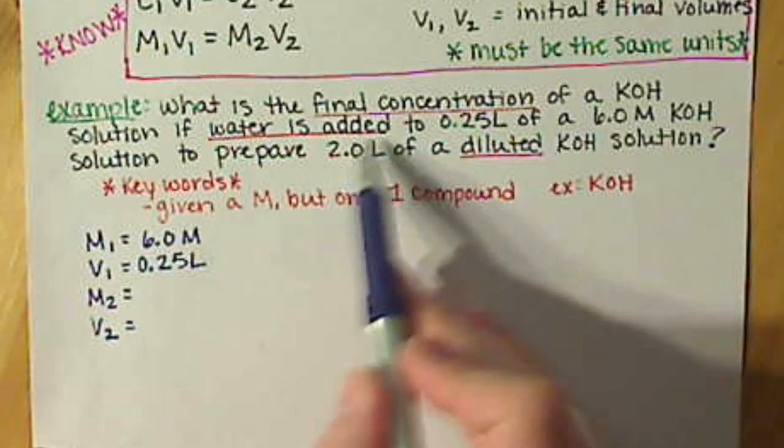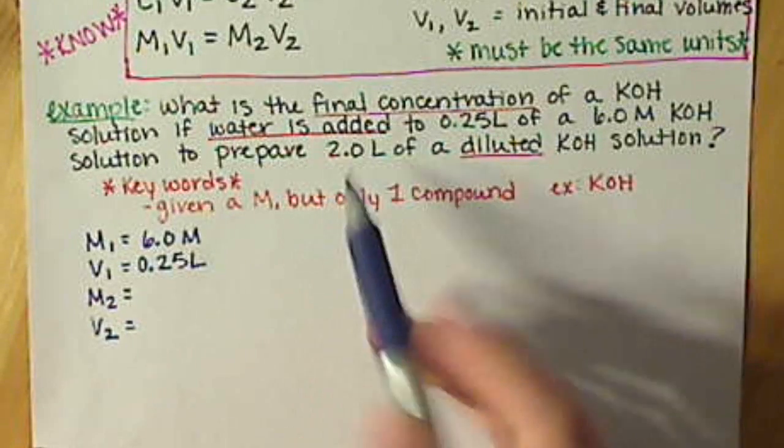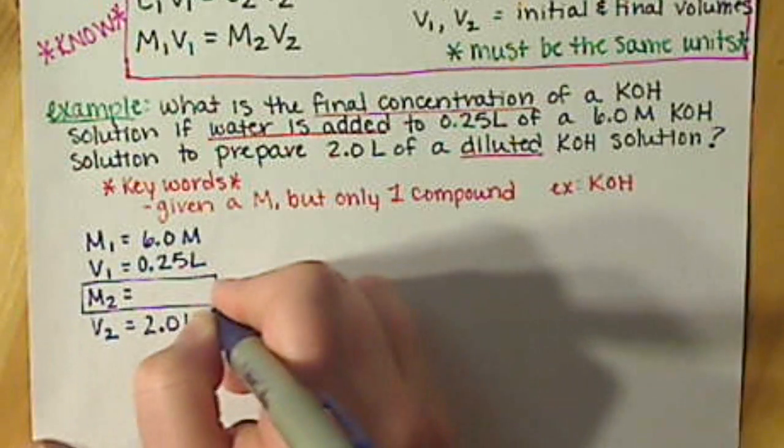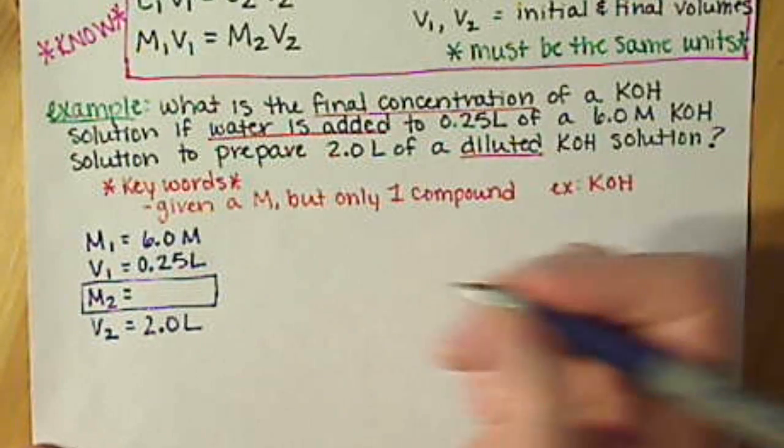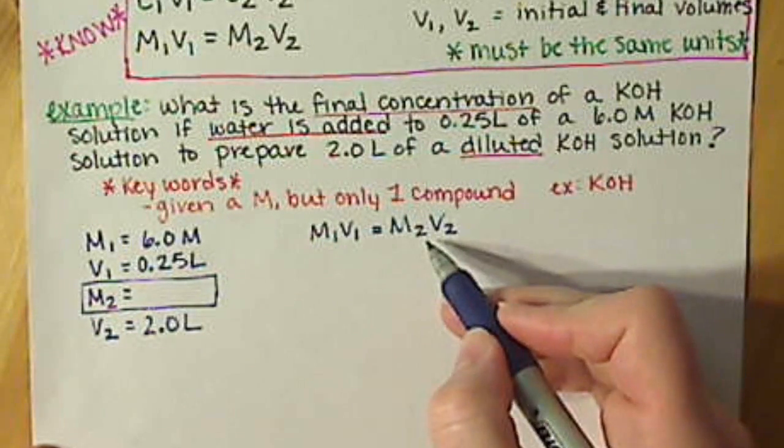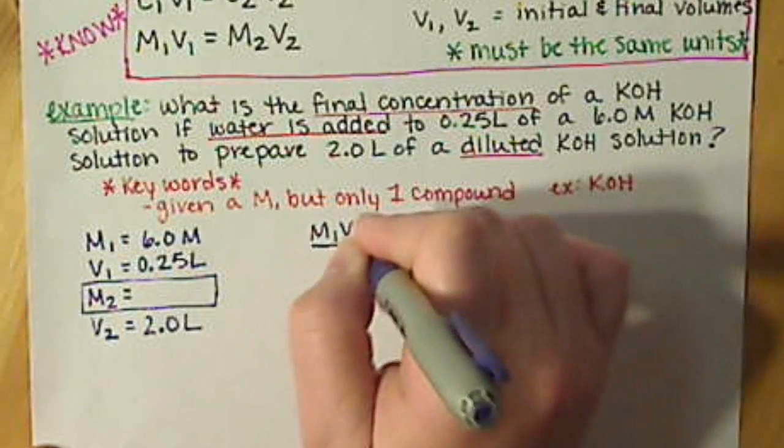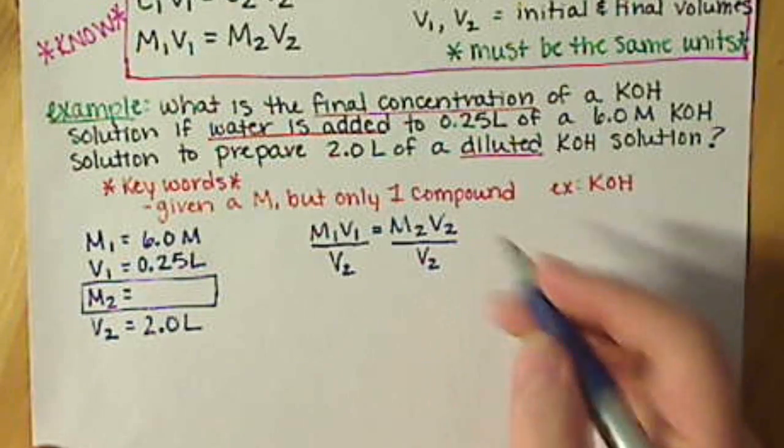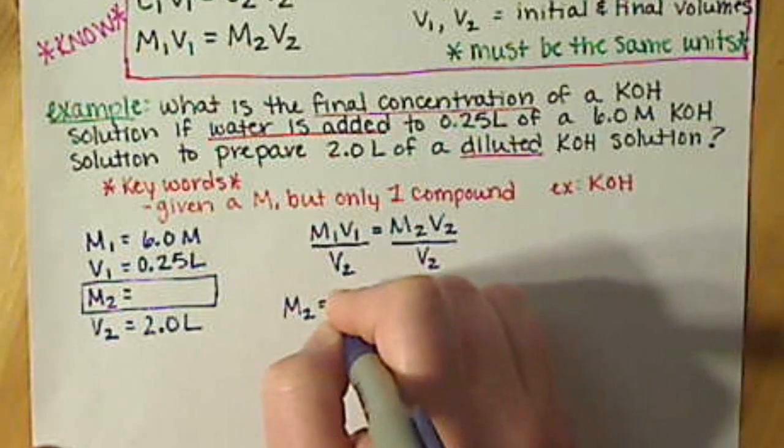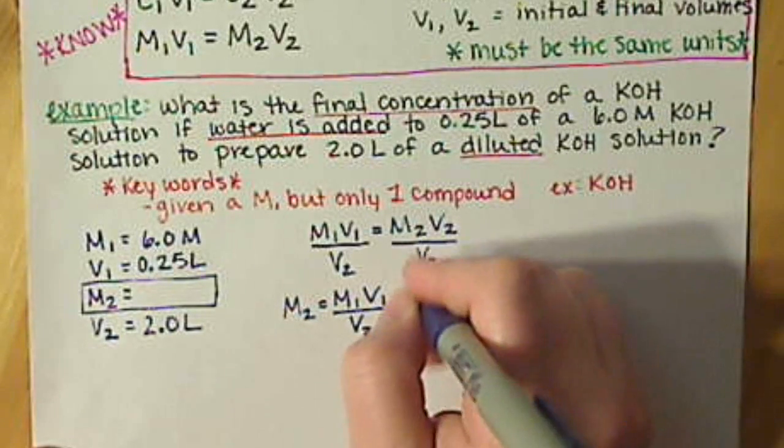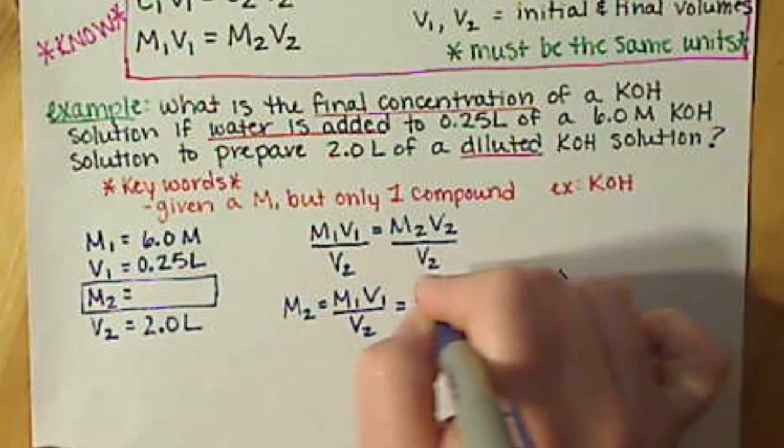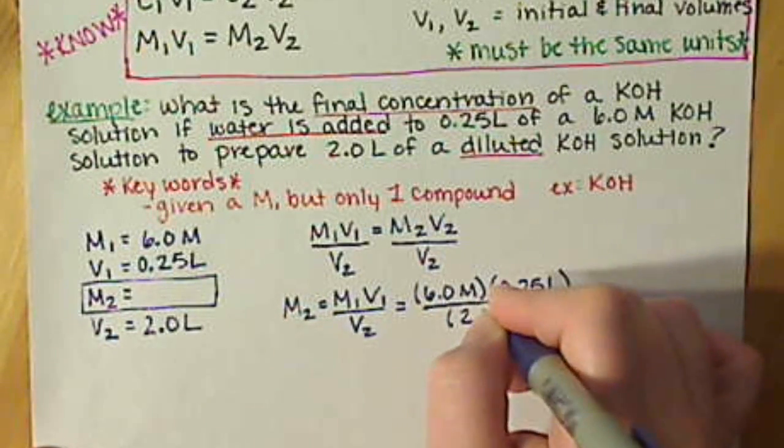We're going to be adding water so that we have a final volume of 2.0 liters, and we're looking for a concentration. So we set up our dilution equation. I want to get M2 by itself, so I'm going to divide both sides by V2. V2's cancel out, and I'm left with M2 equals M1 times V1 divided by V2. My M1 is 6.0 molar, V1 is 0.25 liters, and I'm going to divide that by 2.0 liters.